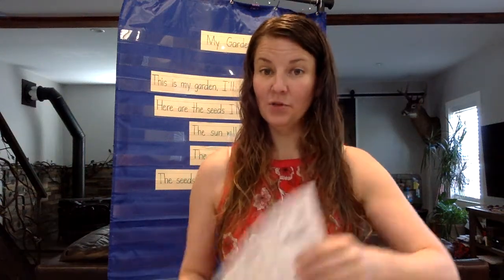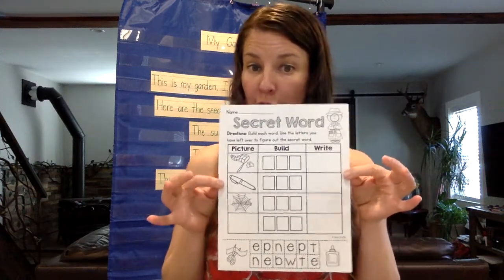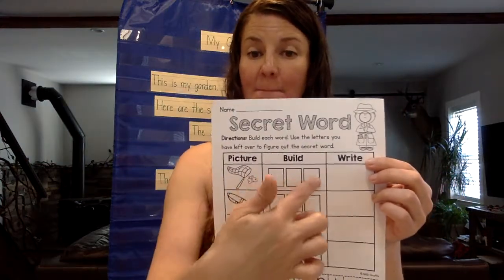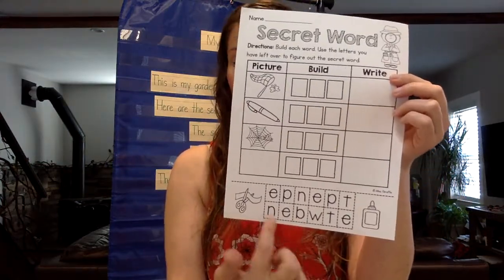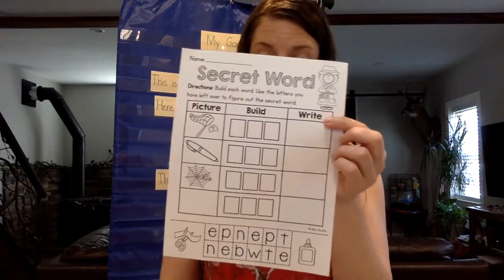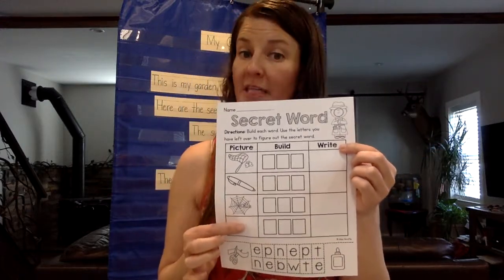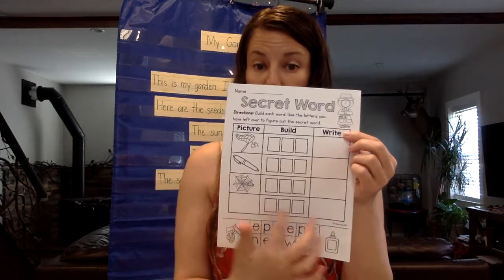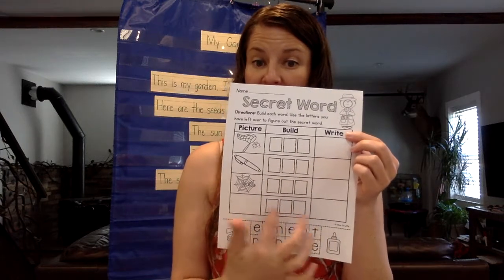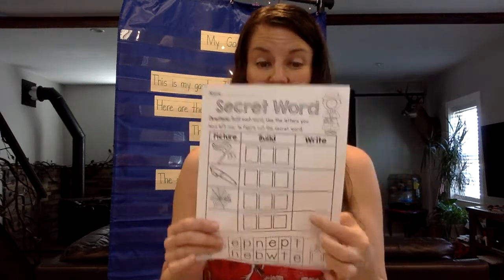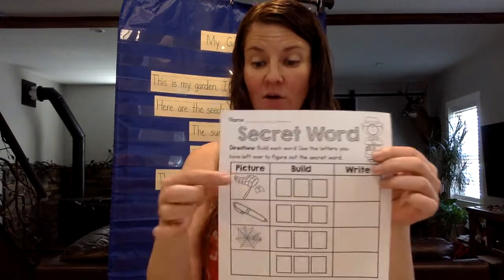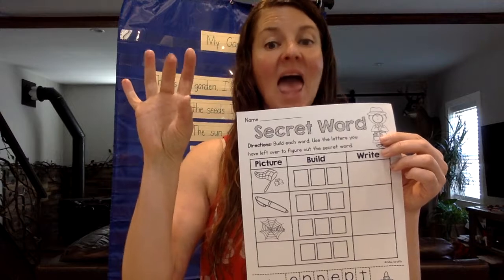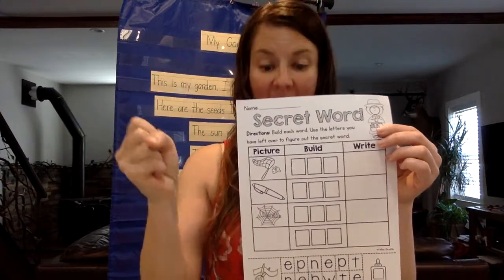Writing practice — you have the secret word and the picture. You're going to build it using the letters on the bottom, then write it. There will be three letters left over and you'll need to find the secret word. You'll draw your picture and write it on this side. Right now we have: net — N, E, T — net.